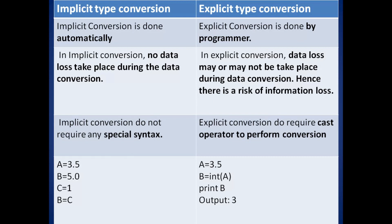For explicit type conversion: A has value 3.5, and we're doing int(A) — there is a function here. So A's value is 3.5, but in B only 3 will be passed, because when we convert 3.5 to integer it becomes 3. So 3 goes into B, and if we print B, the output will be 3.